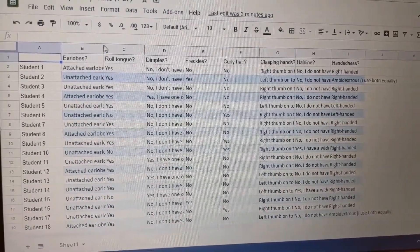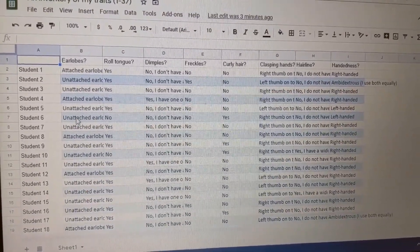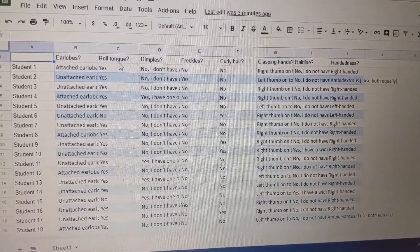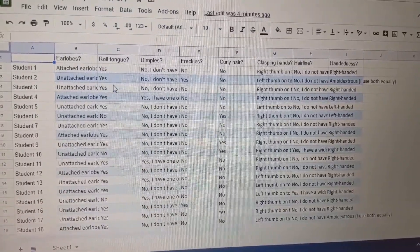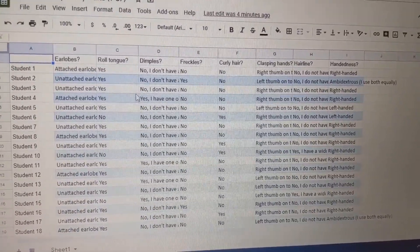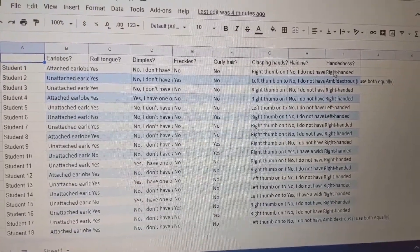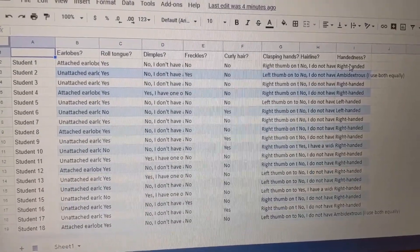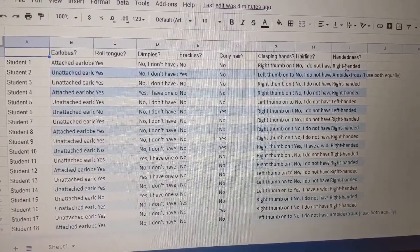I went through and I looked at attached or unattached earlobes and I just counted up all the attached and all the unattached earlobes. And your results for rolling tongue, all the students who could yes roll their tongue or no not roll their tongue. And dimples and freckles and curly hair and clasping hands and hairline and whether or not you're left handed or right handed. So this is all the raw data and I'm going to summarize this data and show that to you next.